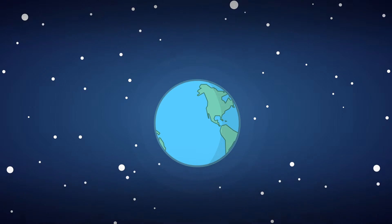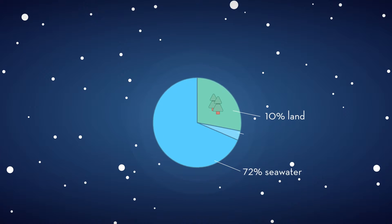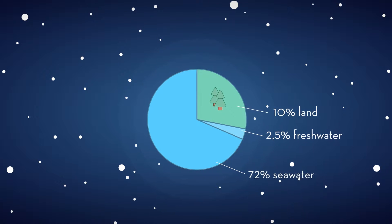Seen from space, the Earth is blue. Seawater covers 72% of Earth's surface, but only 2.5% of all water is fresh water.